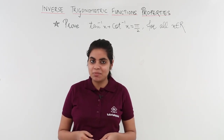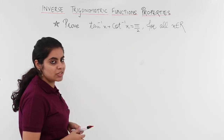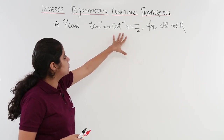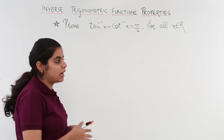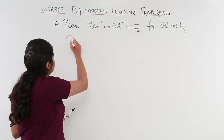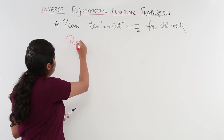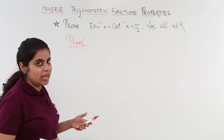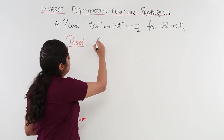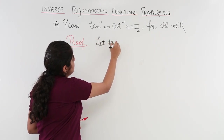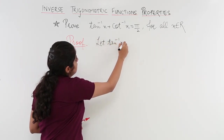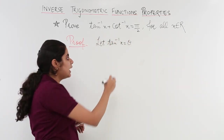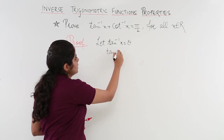Let's get started by solving the proof for this question. Prove tan inverse x plus cot inverse x is equal to pi by 2. Let me write down the proof. As in the previous question, let tan inverse x equal theta, which means tan theta is equal to x.